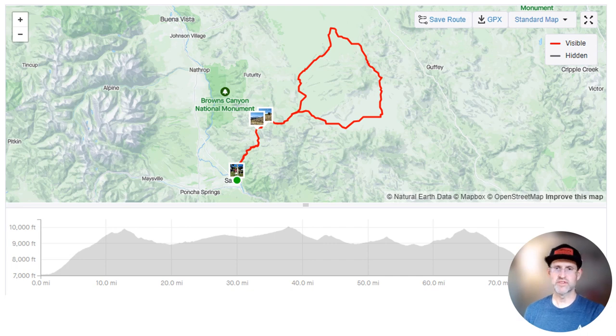The elevation ranges from 7,000 to 10,000 feet above sea level. Only the first 65 miles are timed, as the final descent back to Salida is considered a neutral section, which is undoubtedly safer.